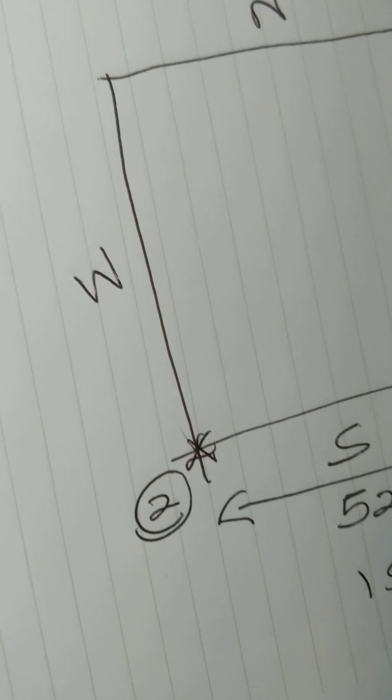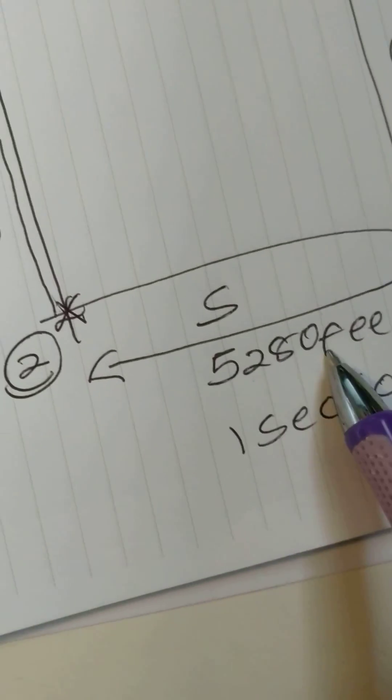Then it says then north on the west line. So I'm going to get somehow halfway because it told me it's 2640, which is half of this number.